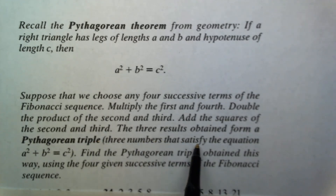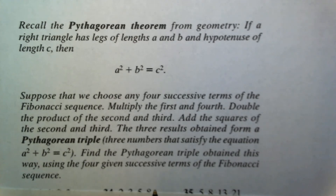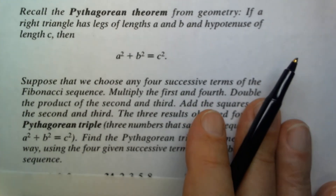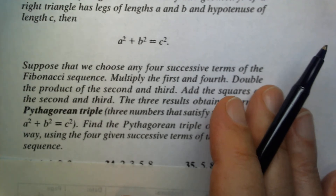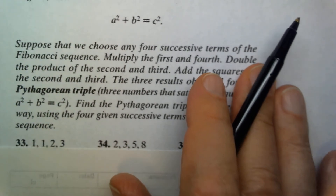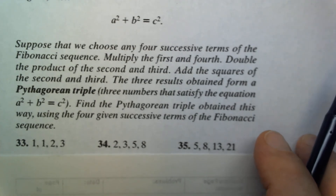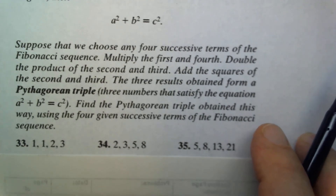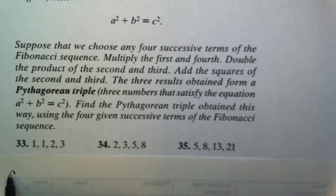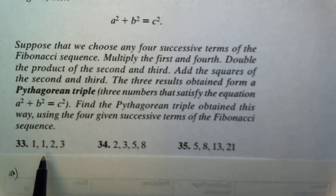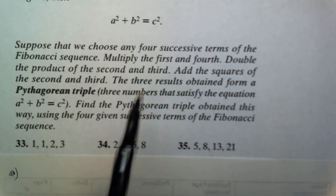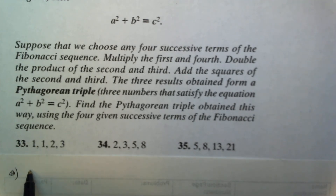In other words, three numbers that satisfy the equation a squared plus b squared equals c squared. We are to find the Pythagorean triple obtained using the four given successive Fibonacci terms. For number 33, the first step is to multiply the first times the fourth: 1 times 3 equals 3.